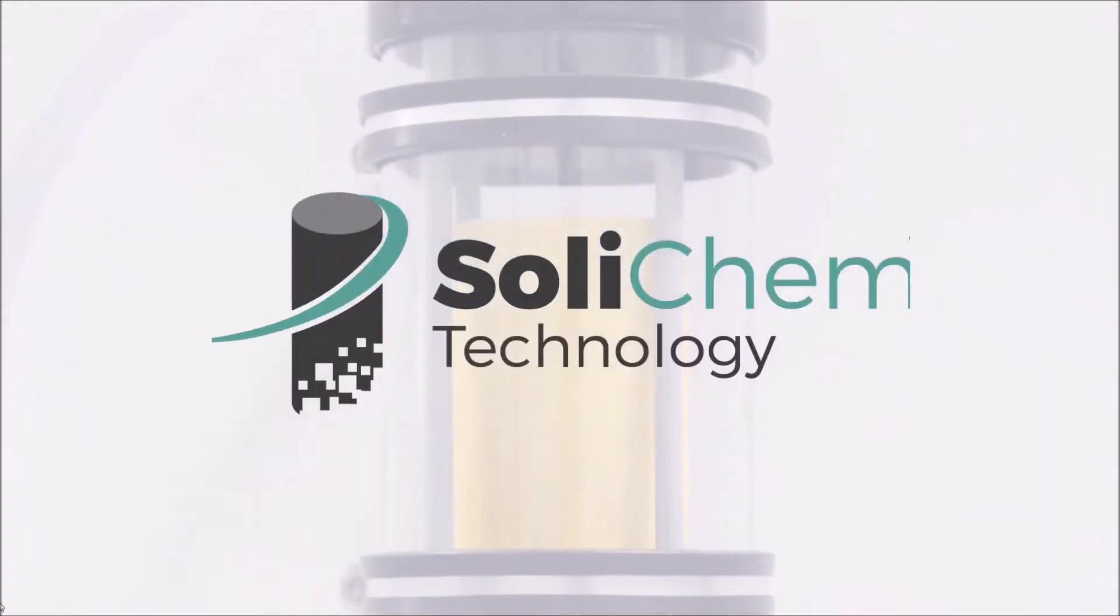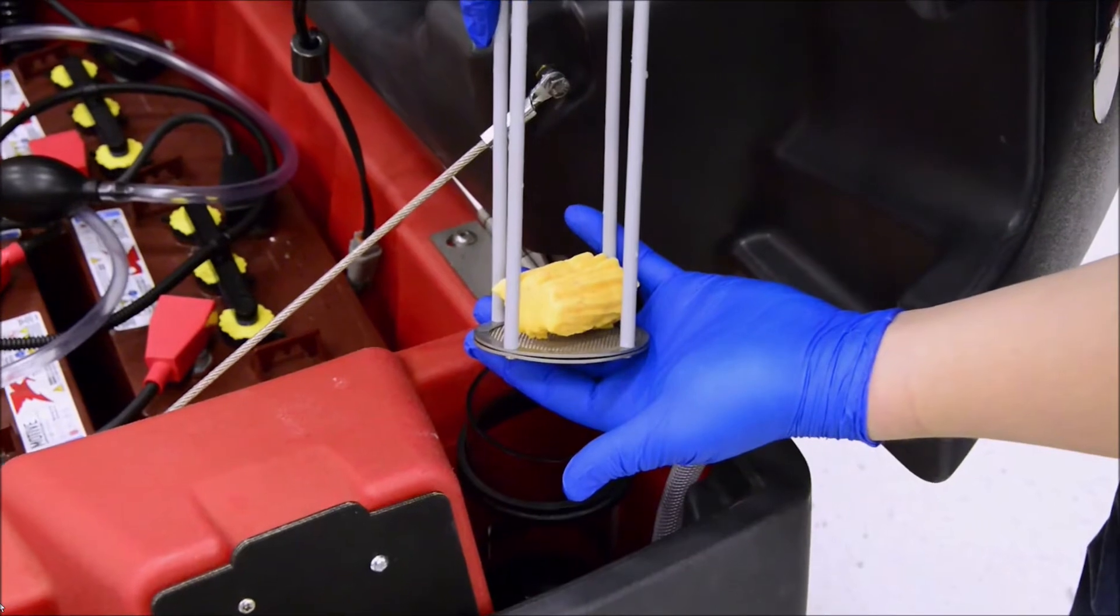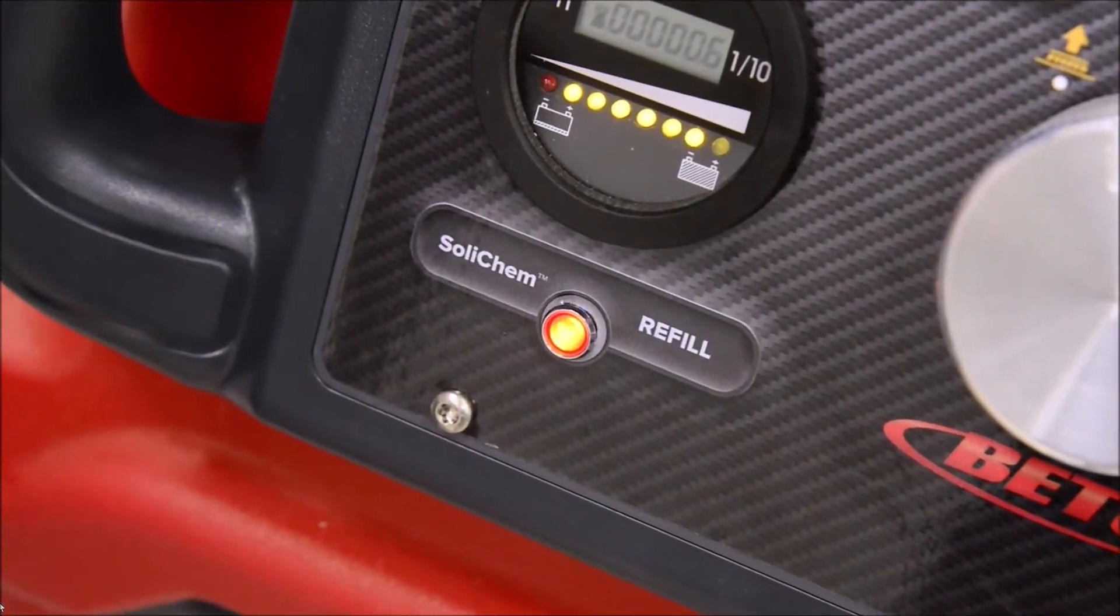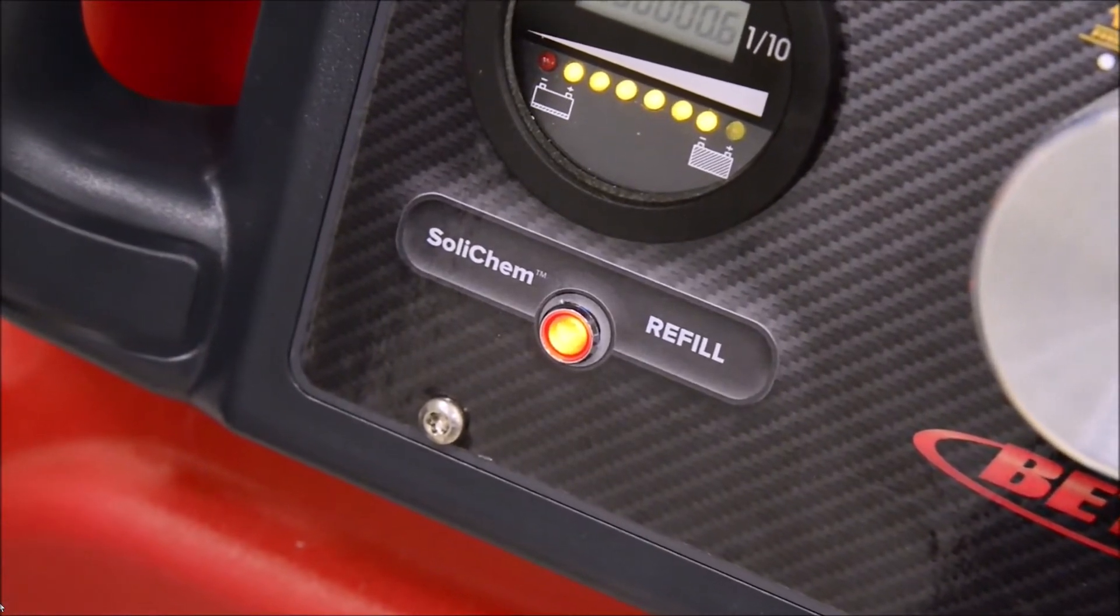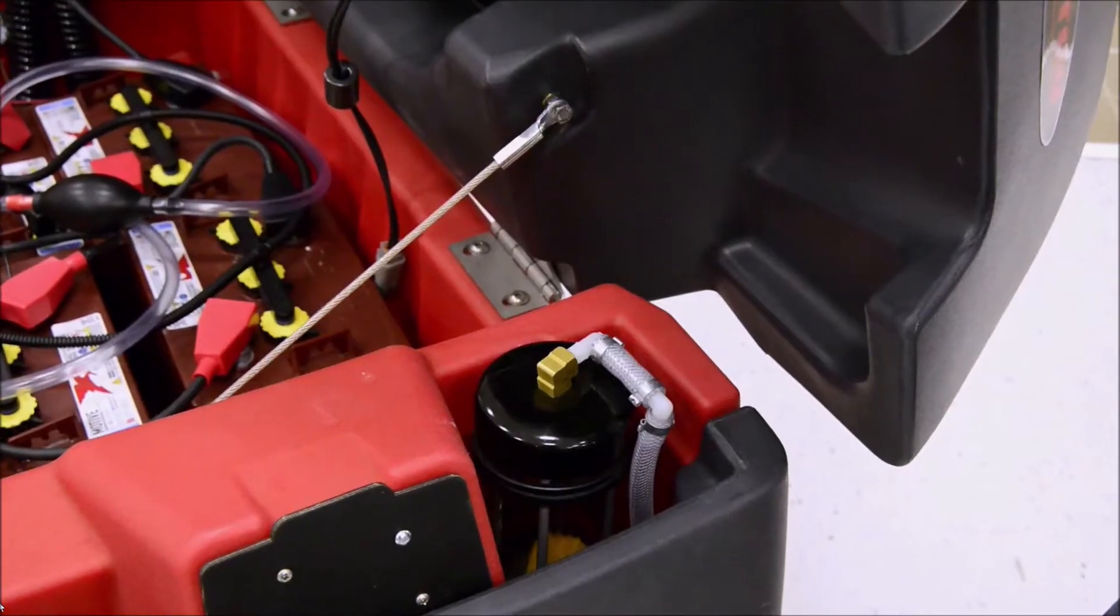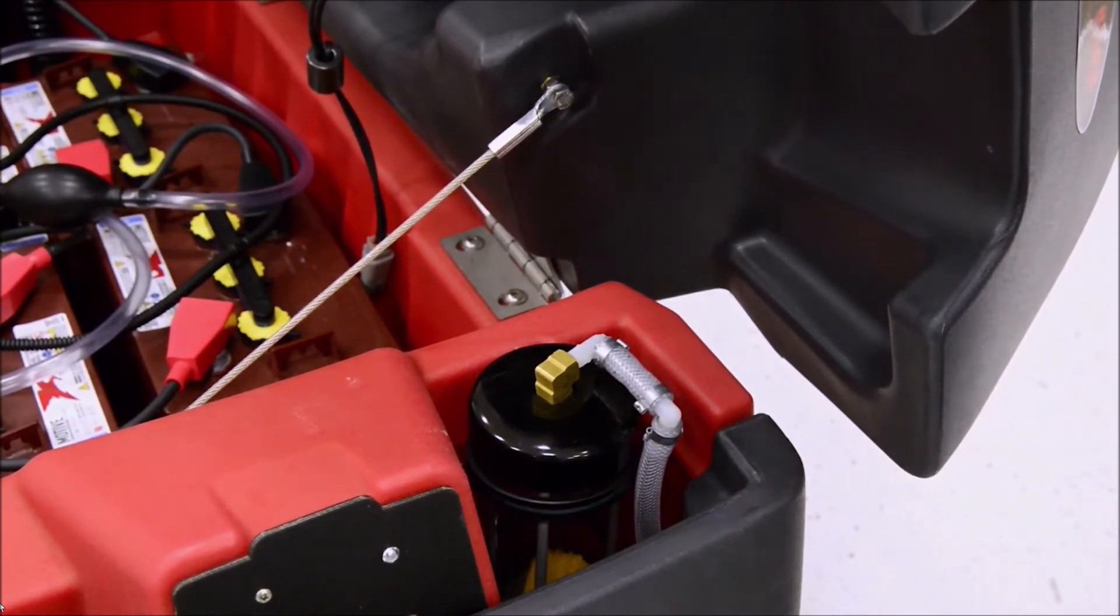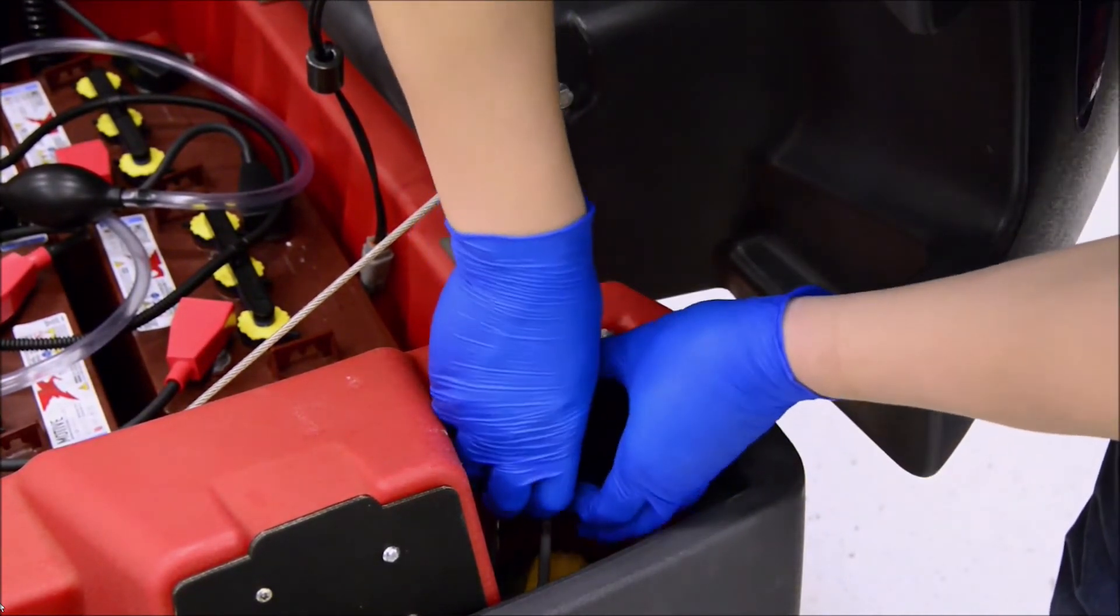If using solid chem technology for your cleaning chemical, there will come a time when the solid chemical is dissolved and needs to be replaced. At that time, the solid chem refill indicator on the dash will light up to notify the operator. To replace the solid chemical, lift the recovery tank to open up to the battery compartment and locate the solid chem at the front left of the machine.